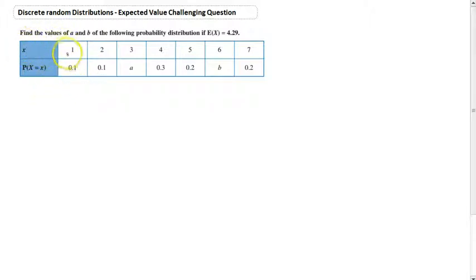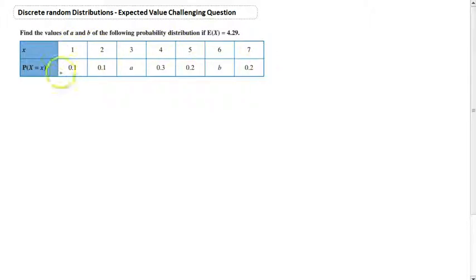Now here's a discrete random distribution. X can be any value from 1 to 7, and the probabilities of each of those values occurring are 0.1, 0.1, A, 0.3, 0.2, B, and 0.2 for 7.